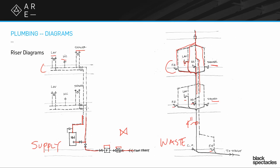The hot and cold pipes rise through the building — they could be in the floor, dropping from the ceiling, running through walls. Both hot and cold go to the lavatory, just cold goes to the water closet, and hot and cold go to mixing valves at the shower. It's a fairly simple concept overall.